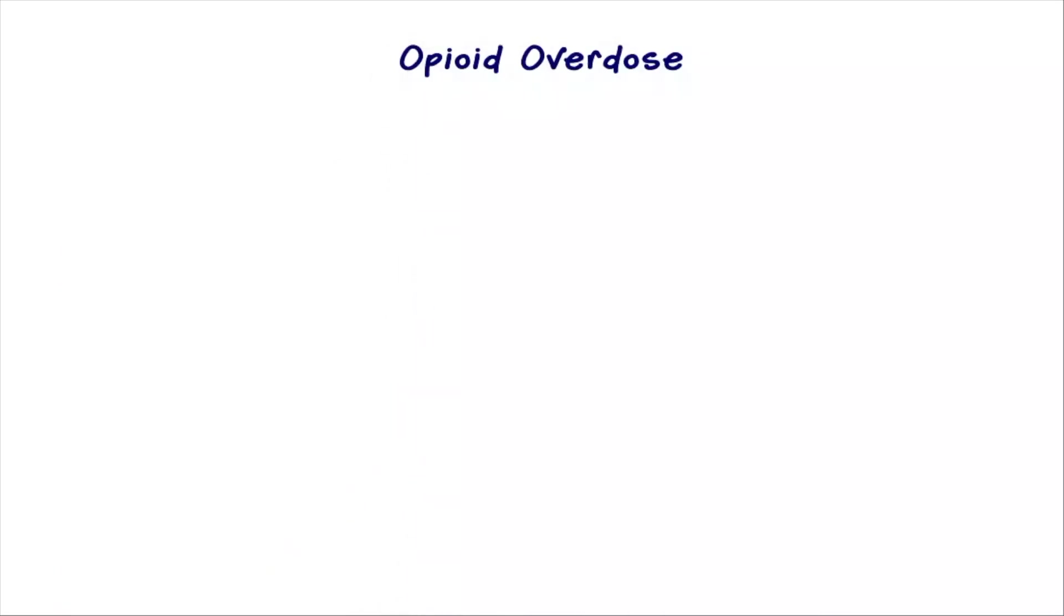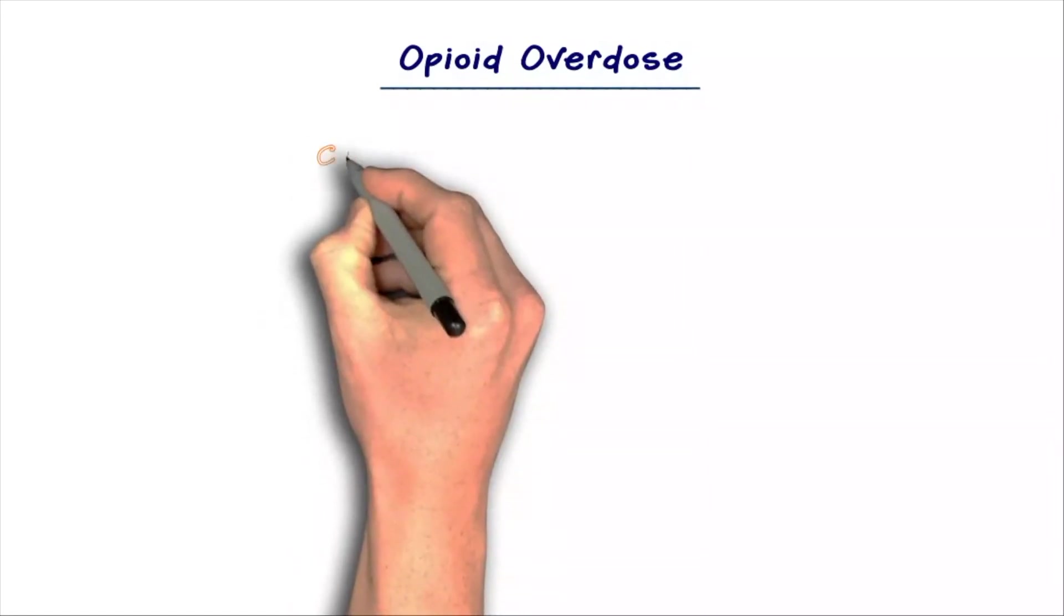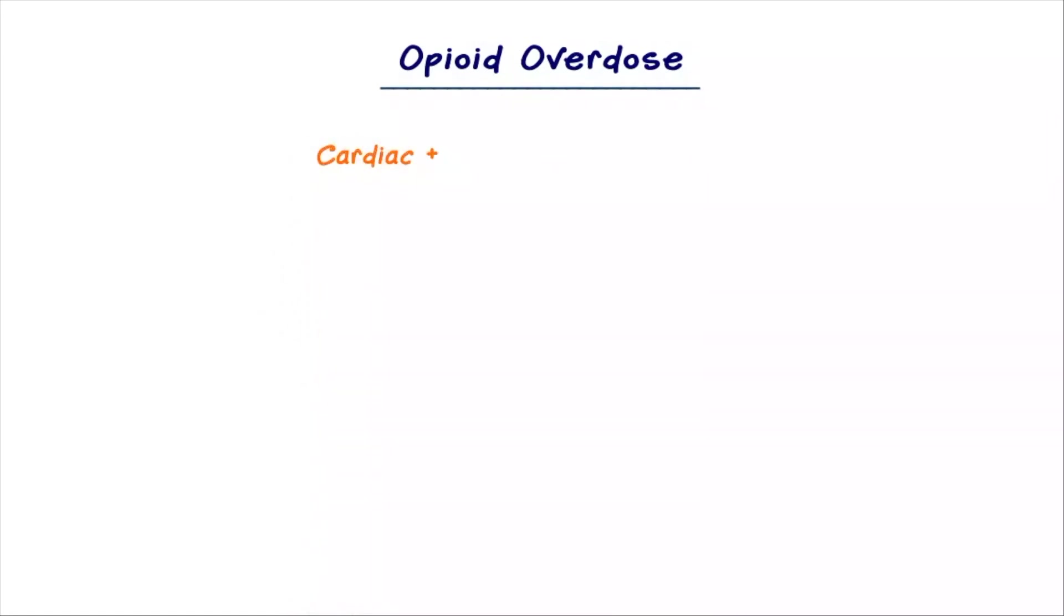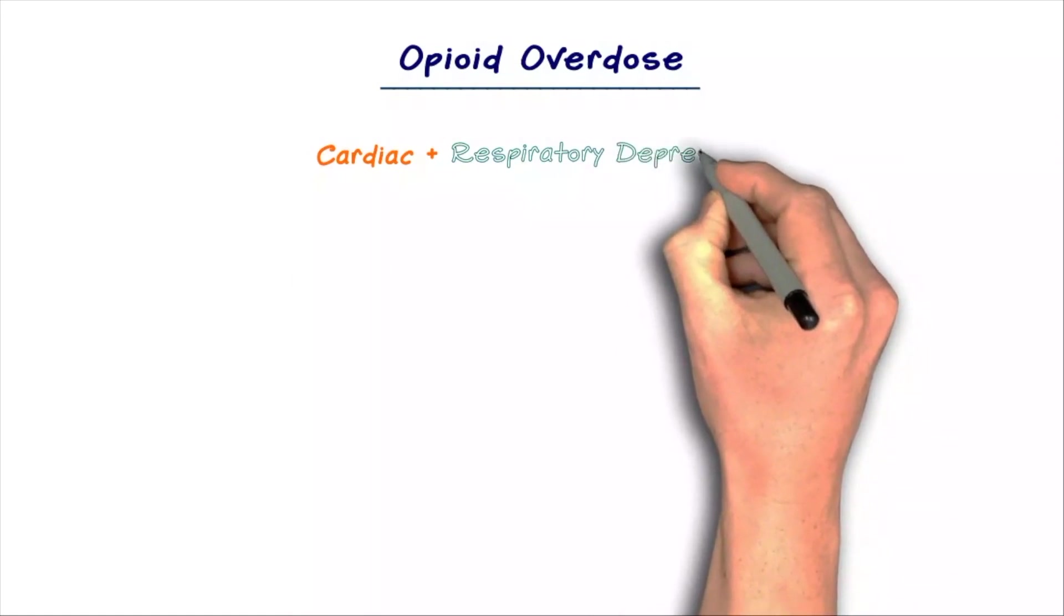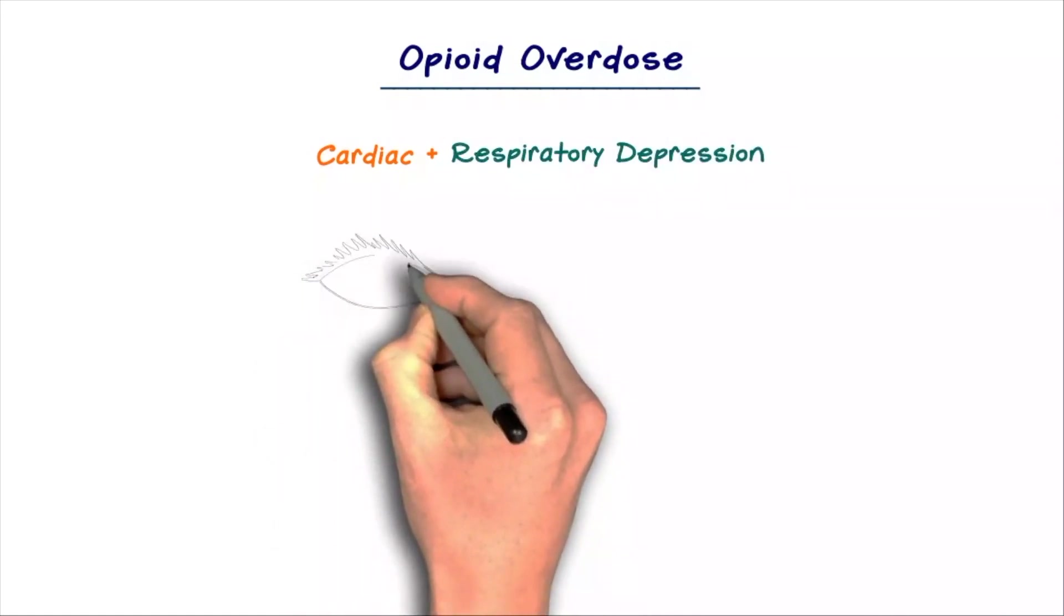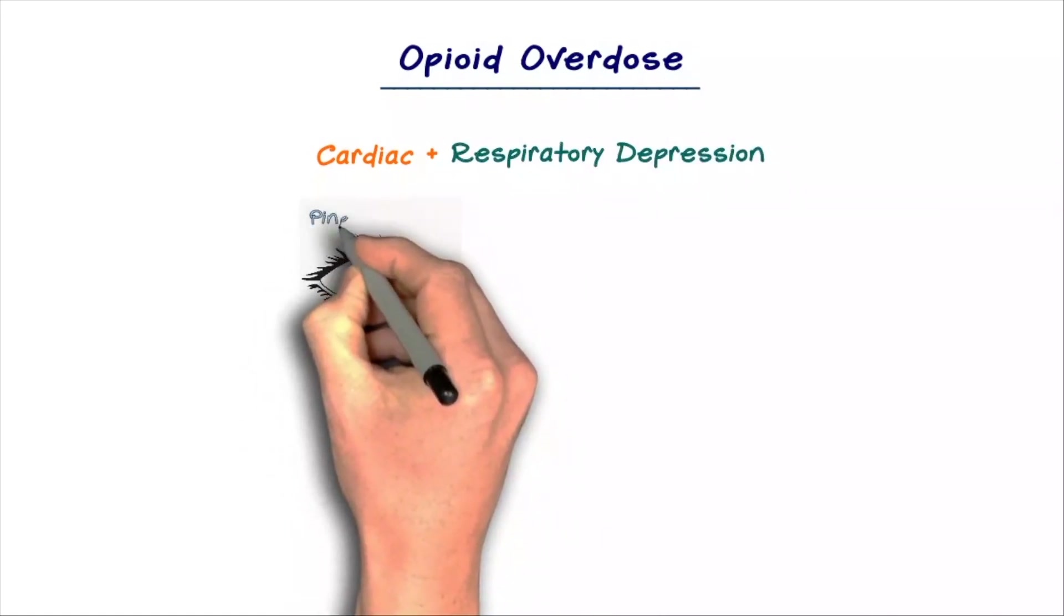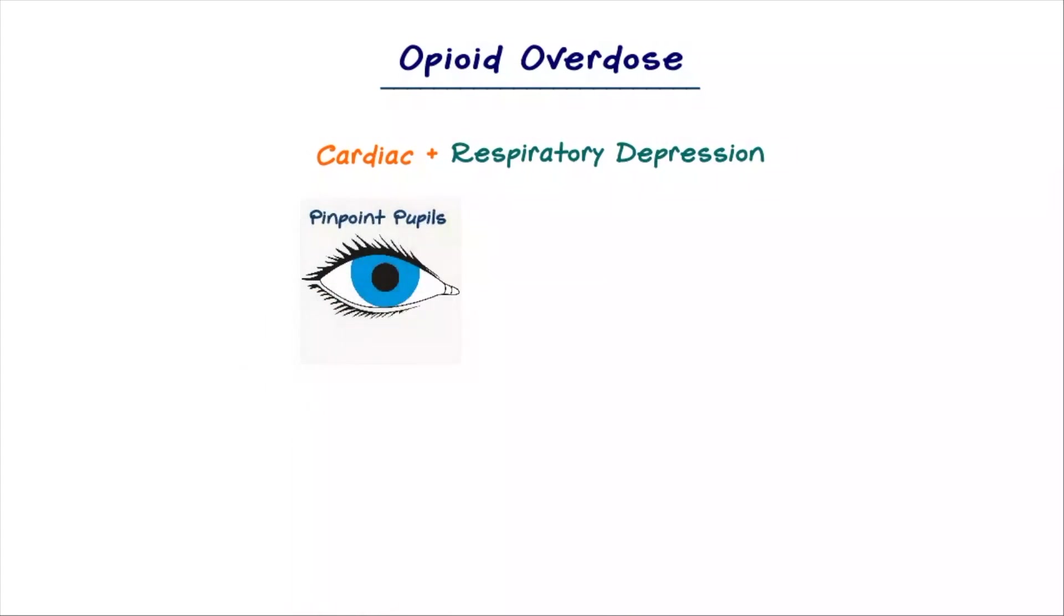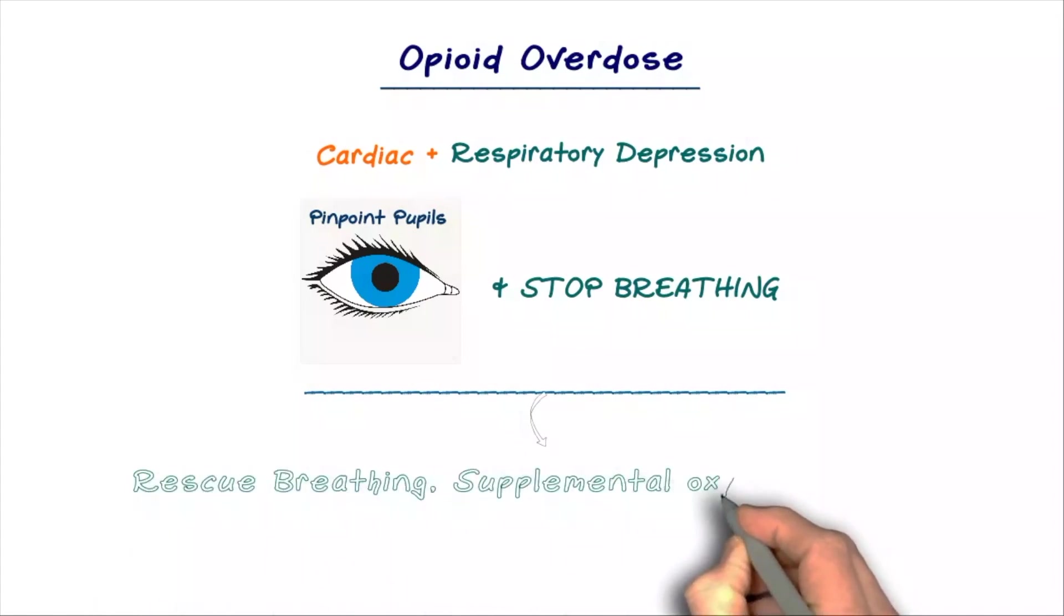In addition to ruining a person's life, opioid addiction can also end it in an overdose. Most often, an opioid overdose causes severe cardiac and respiratory depression. To the point where a person may have pinpoint pupils and simply stop breathing. In that situation, the most important thing is to perform rescue breathing. Giving supplemental oxygen and administering naloxone.